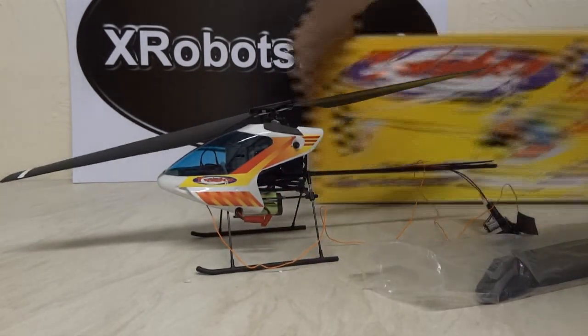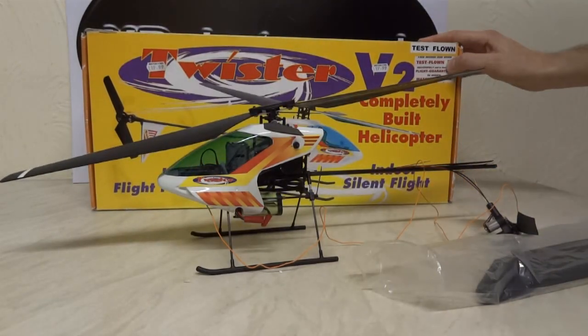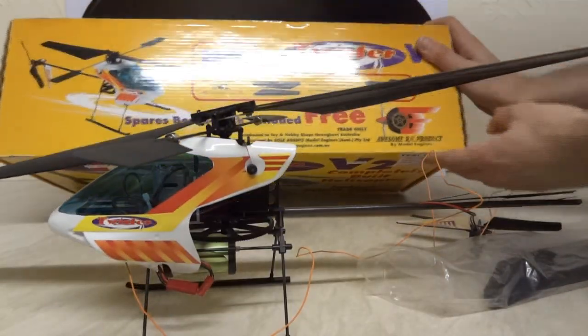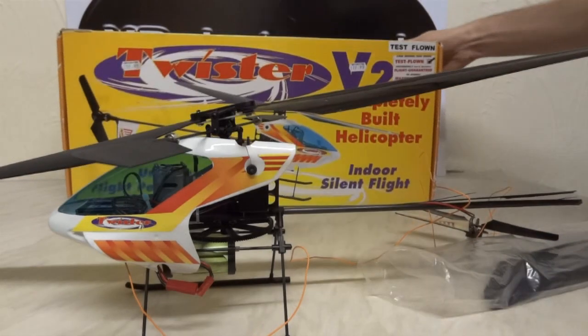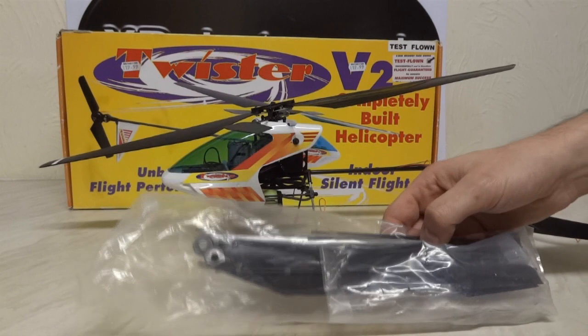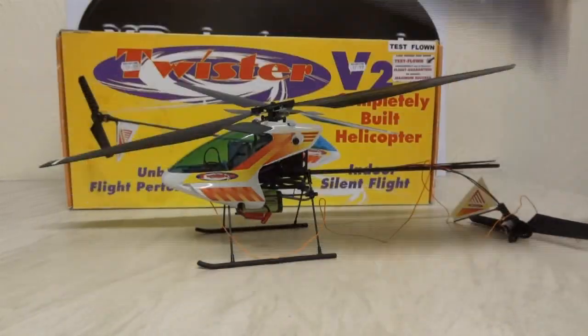I've got the box here. It's a Twister version 2, though we're not sure what the make is. It just says awesome RC product by model engineers. Anyway, it came with a whole bunch of spare bits, spare rotors as did the Revel. But as with the Revel, that's not what's broken.